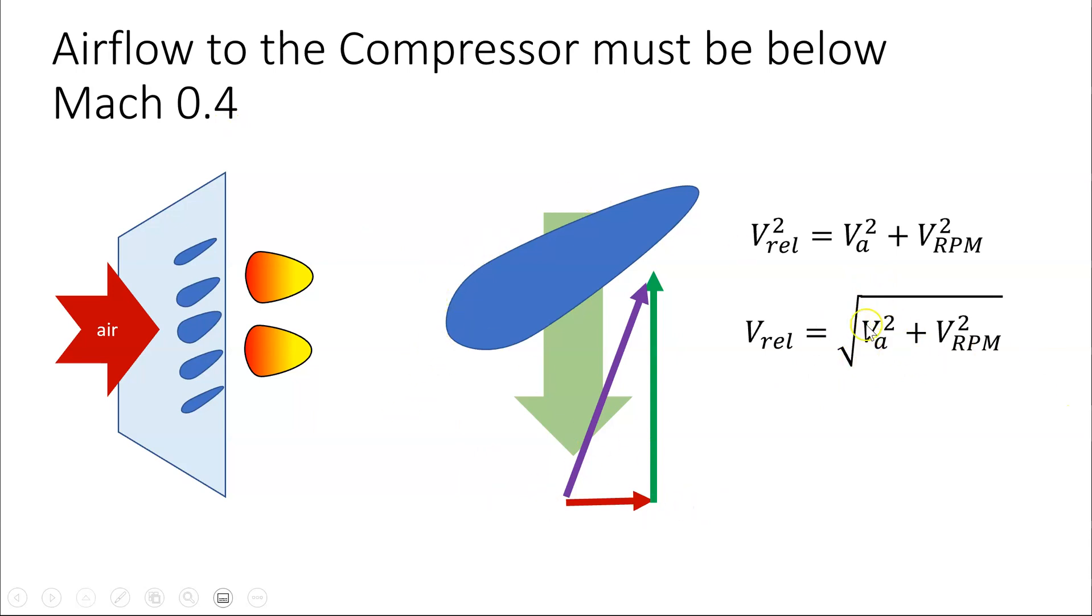So if that increases to Mach 0.5 or 0.6, then the air flow, because it's this value plus this value, the air flow over here would definitely be supersonic. So we need to control this to below 0.4. And that gives us a problem.